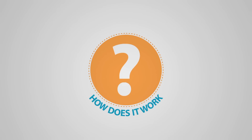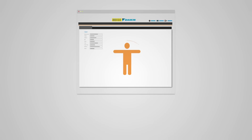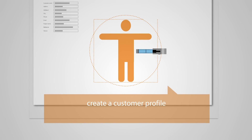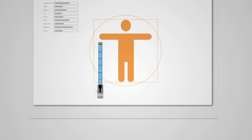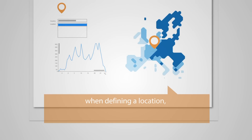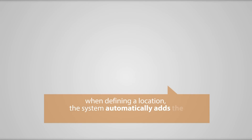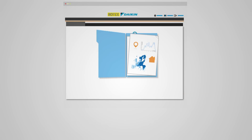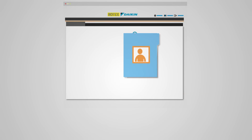How does it work? The main features of our selection software allow you to create a customer profile of unprecedented accuracy. For example, when defining a location, the system automatically adds the climate-related data to the user profile. This will later on help you to select the most appropriate system size.